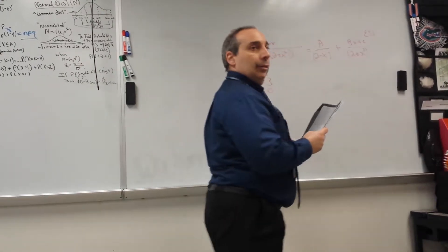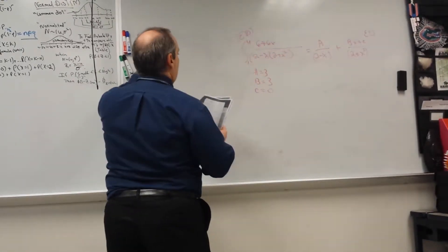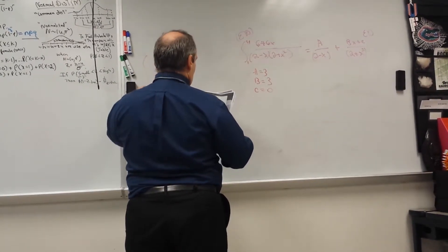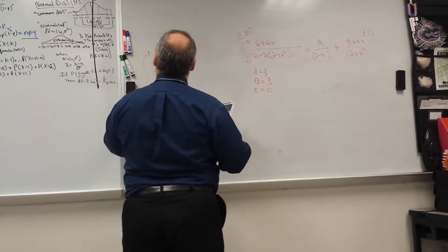So here we go, yeah. So it's going to be what? 3 over 2 minus x, right? We're going to integrate it from 1 to minus 1.